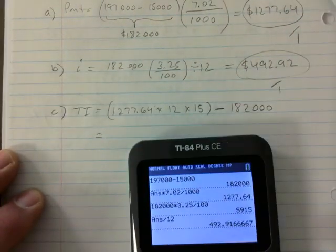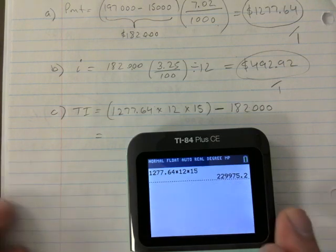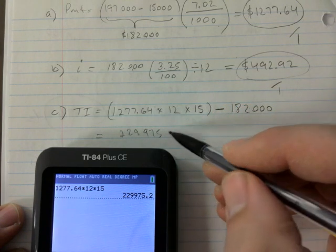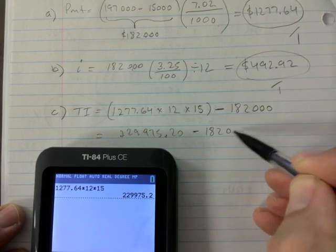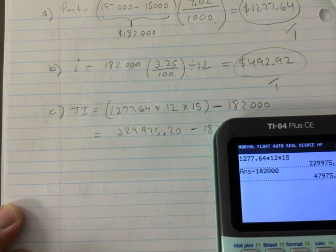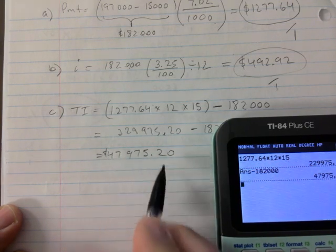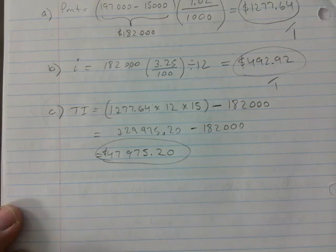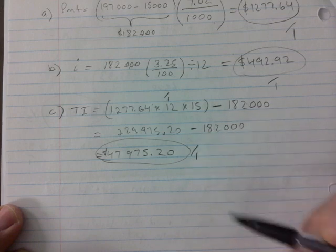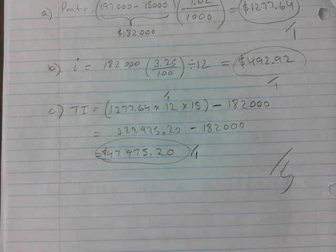And so I need my calculator for that. So you pay them $229,975.20, that's one mark already for that one. And then another mark for actually subtracting $182,000 from it. It's $47,975.20. You have to have a zero after that too because it's a dollar amount, and you have to have a dollar sign if you want the full marks. So one mark for this part and then one mark for subtracting to get that. Okay, so we are one, two, three, four, five marks for this one.